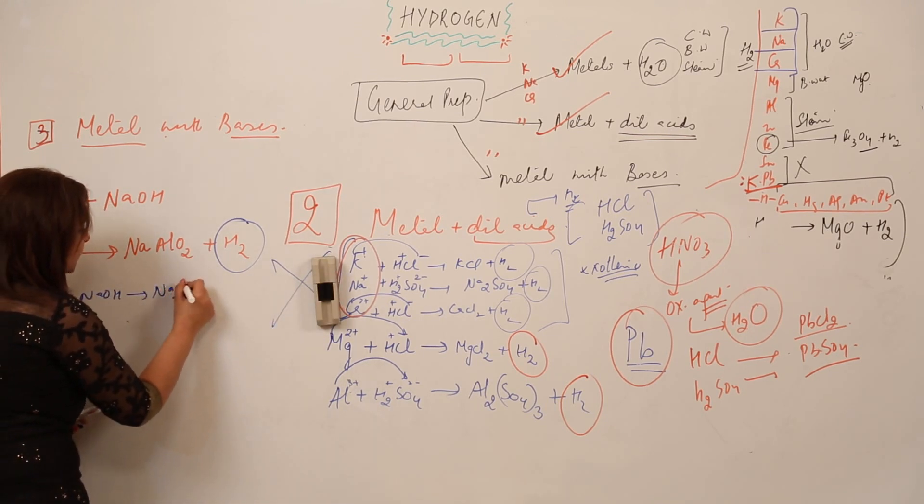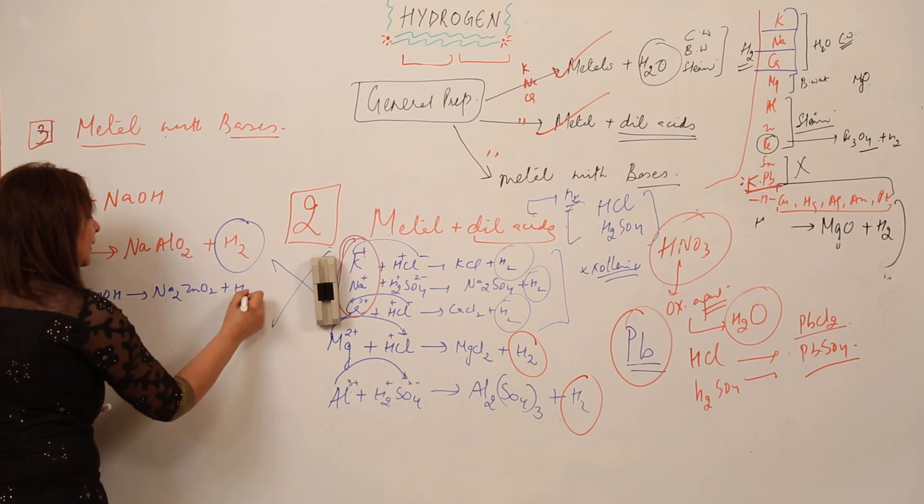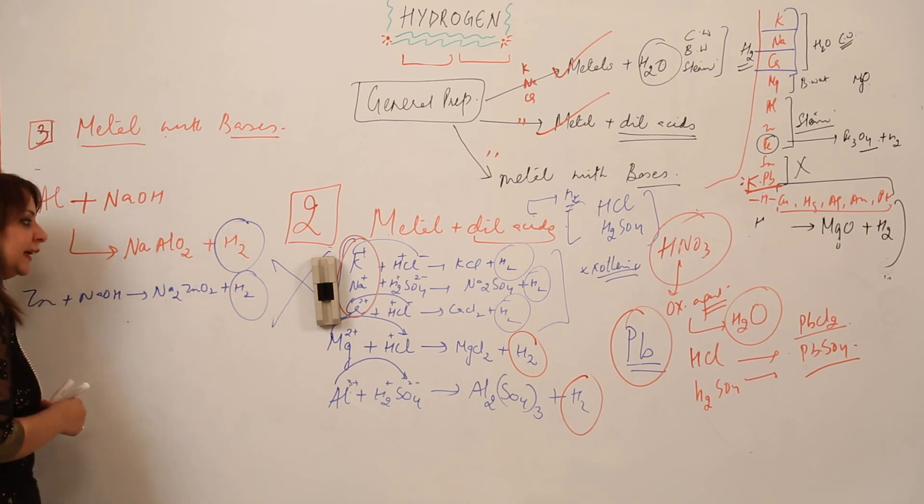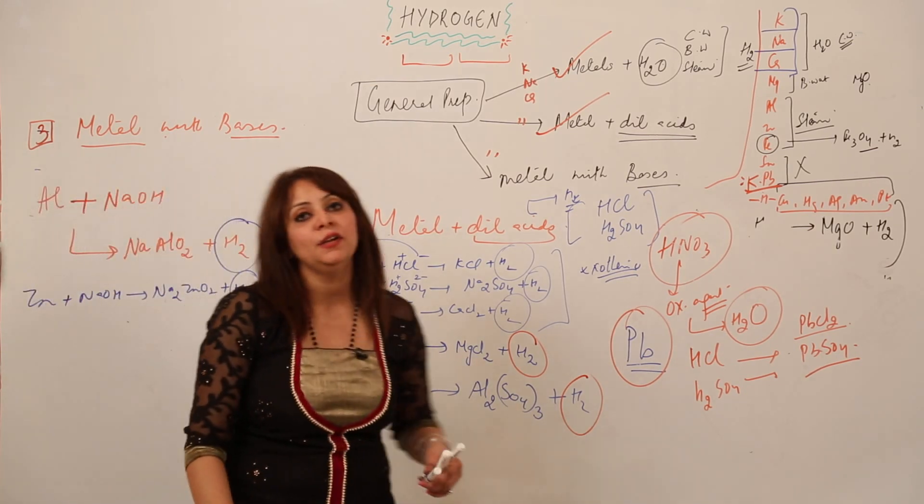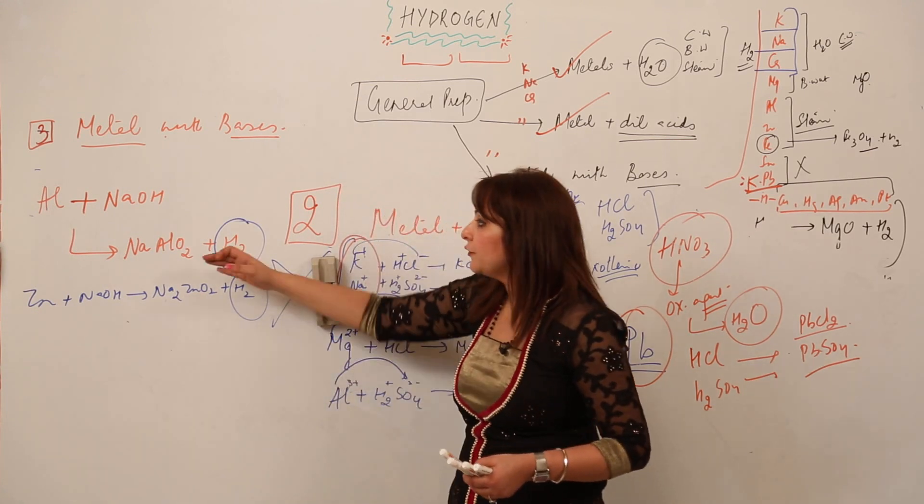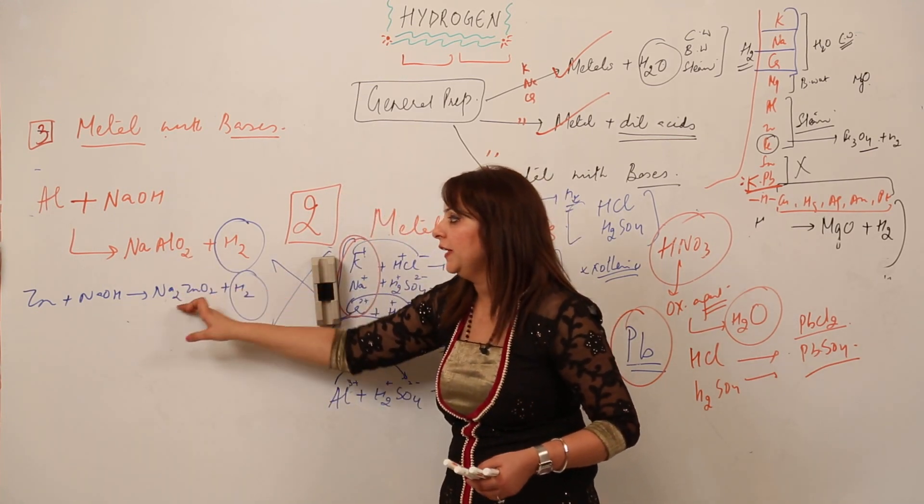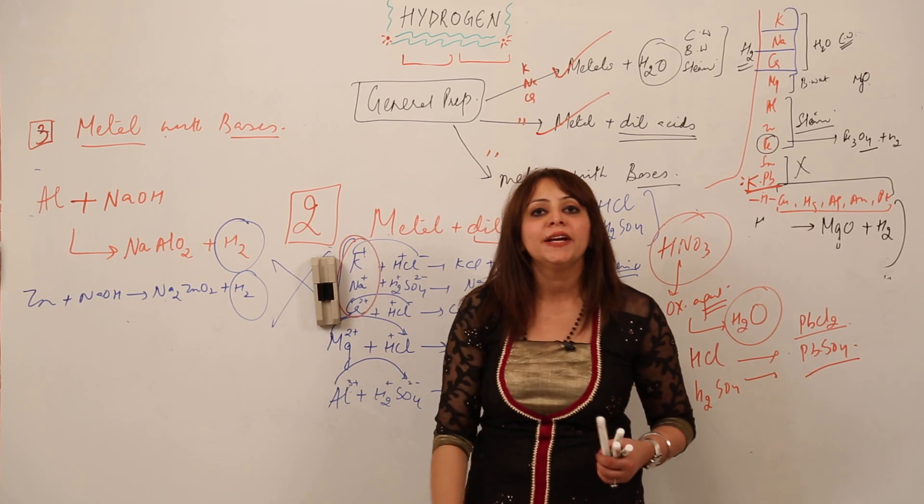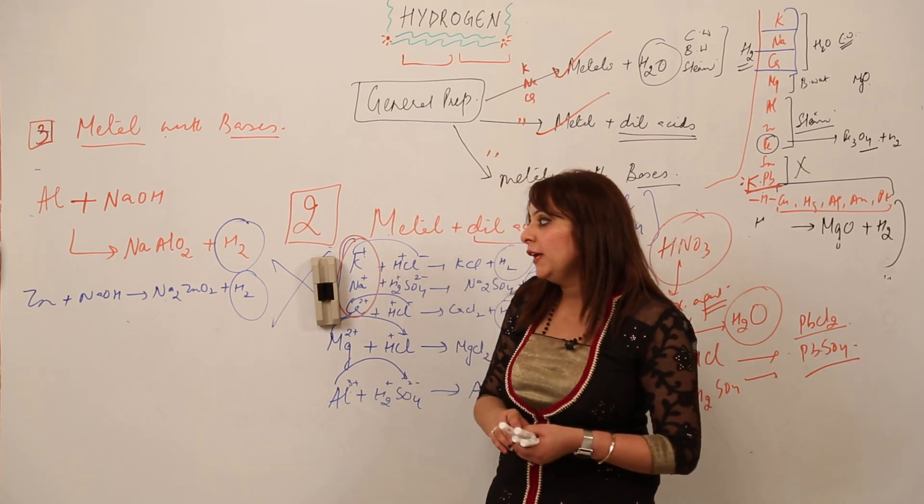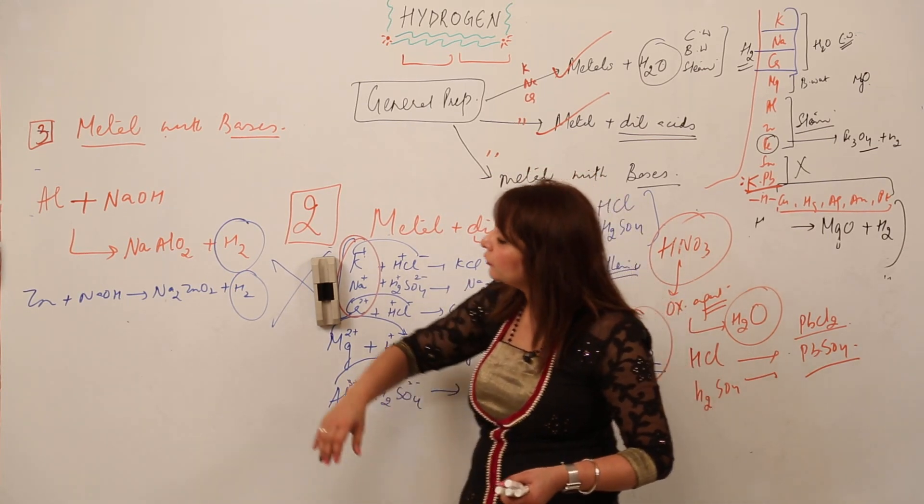Similarly, when zinc reacts with NaOH, it forms sodium zincate and again our desired product H2. Likewise, we can react the metal with bases and we will be getting different salts like sodium aluminate, sodium zincate, and along with that our desired product.